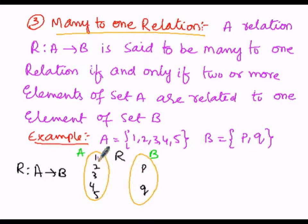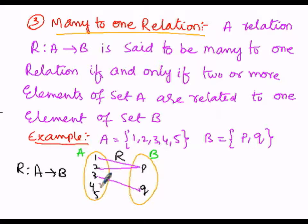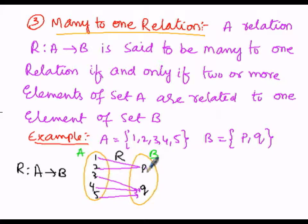Elements 1 and 2 are having a relationship with one element, that is P. The image of 1 is P and the image of 2 is also P. The image of 3 is Q, image of 4 is also Q, and image of 5 is also Q. So 2 elements of set A map to P, and 3 elements — 3, 4, 5 — map to only one element Q. Therefore this relation is a many-to-one relation.